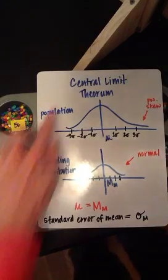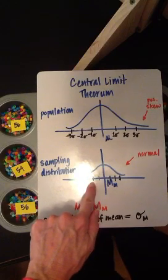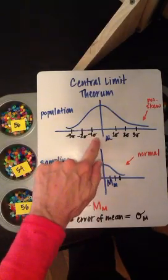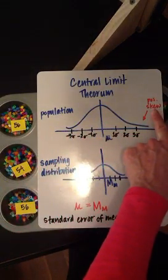Now, according to the Central Limit Theorem, your sampling distribution will be a perfect normal curve, even if your population is not. So here I have a population that's slightly skewed positively.